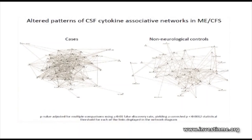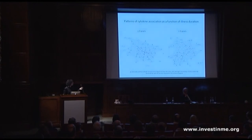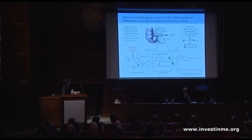This is just a network association showing cases versus controls. By and large, cases have much more co-association, much more activation of multiple pathways versus the controls. You see a little bit more in the short-duration spinal fluid samples, but not that much more — it's not as striking as when you're looking versus controls.